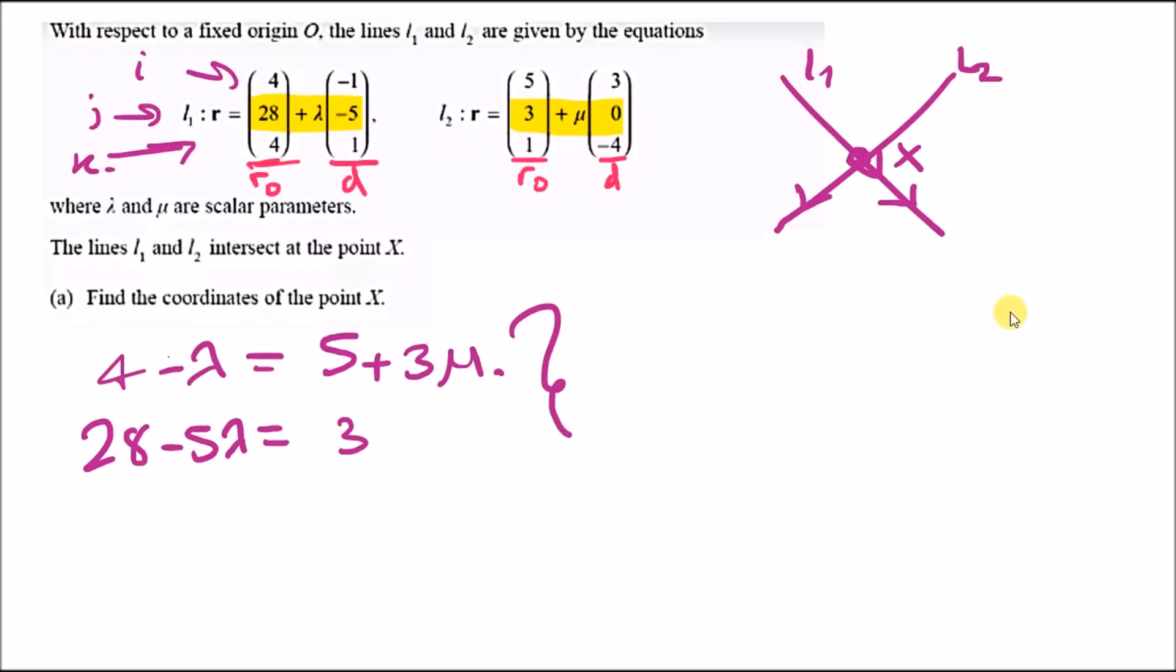Just solving this simultaneously, we can find that lambda and mu equal 5 and negative 2. Now just plug this into one of these equations. I'll take the second one because it looks easier. If you put lambda 5 here or mu equals negative 2 here, you should get the exact same position vector.